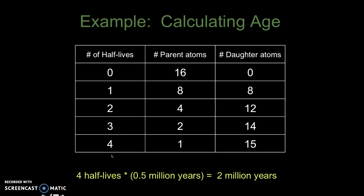This tells us that four half-lives have passed. We're going to multiply the number of half-lives by the known half-life, which is 0.5 million years, and that tells us that the mineral grains we're looking at were formed 2 million years ago.